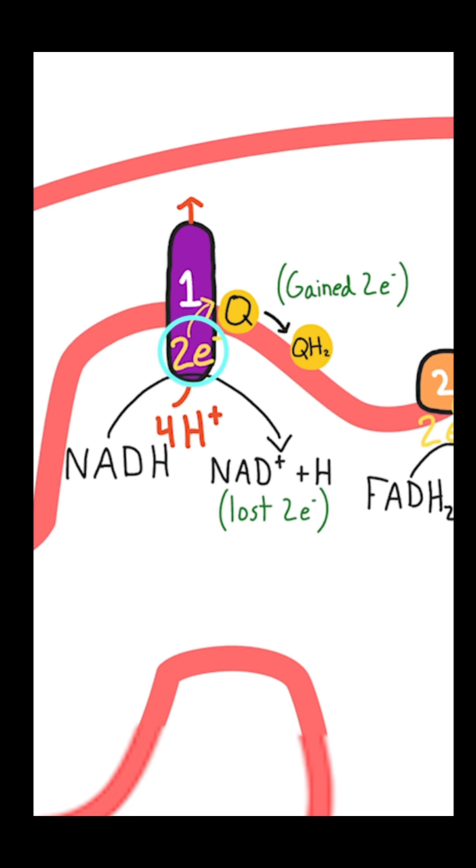Some resources are going to talk about how the electrons move through Complex 1, but in my opinion those details are completely unnecessary, and all you need to know is that these electrons eventually make their way to this molecule here, which is coenzyme Q, also called ubiquinone.